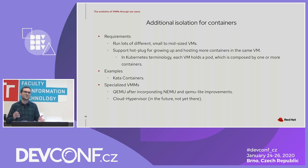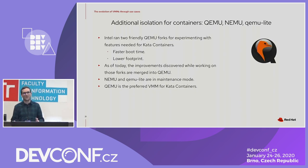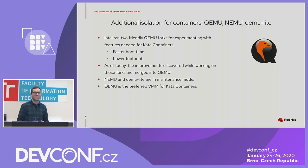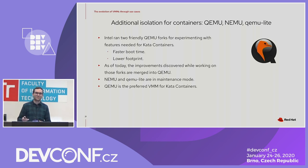Regarding QEMU, NEMU, and QEMU-lite: Intel ran a friendly QEMU fork for experimenting with features they needed, mainly faster boot times and a lower footprint. Those improvements have since been merged to mainline QEMU, so NEMU and QEMU-lite are now in maintenance mode. QEMU is now the preferred VMM for running Kata Containers, and this is an example of how QEMU has evolved through friendly forks to better suit this use case.